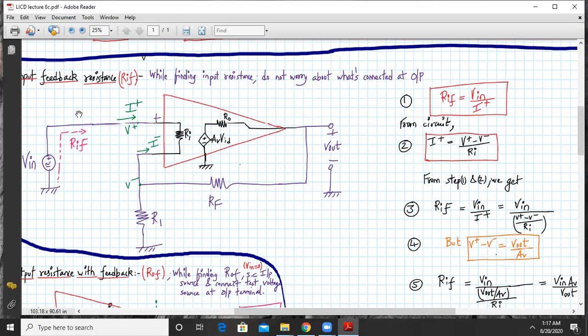I plus can be written as V plus minus V minus upon RI. I repeat, I plus can be written as V plus minus V minus upon RI. From step number one and two, we can get RIF will be equal to V plus upon I plus. So I plus is nothing but V plus minus V minus upon RI.